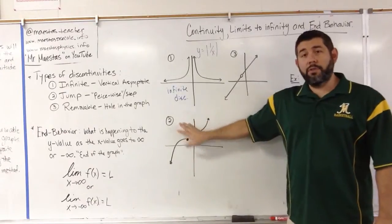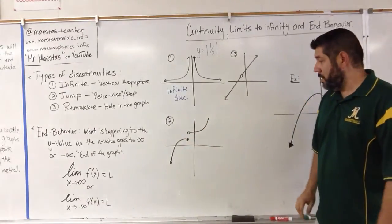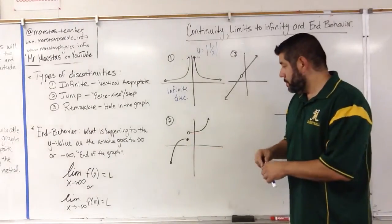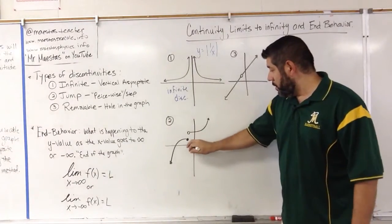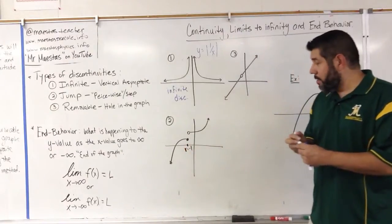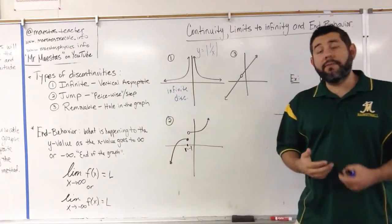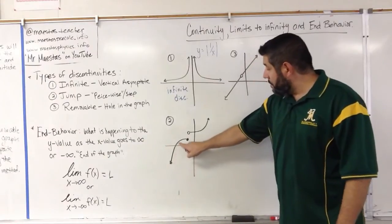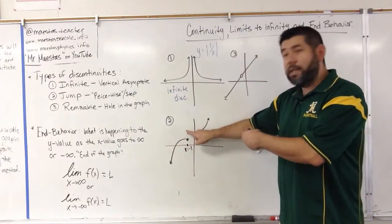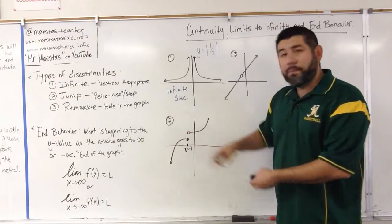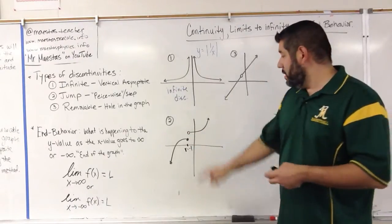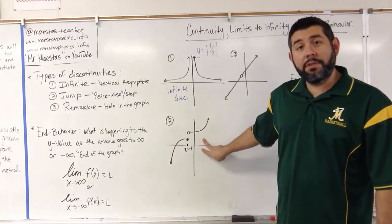Taking a look at number two, we've got a piecewise defined function. x is defined at negative 1 because we have a closed circle right here. At negative 1, it is defined. However, if we draw our graph, we have to jump to the next part of the graph. We have a break in the graph, and that is a discontinuity — specifically, this is an example of a jump discontinuity.